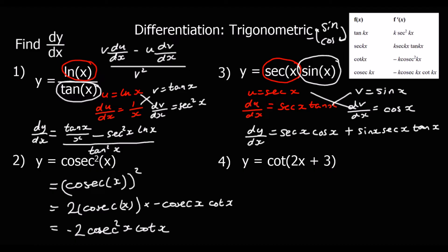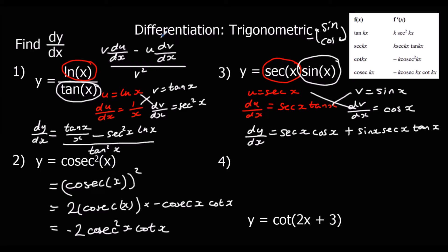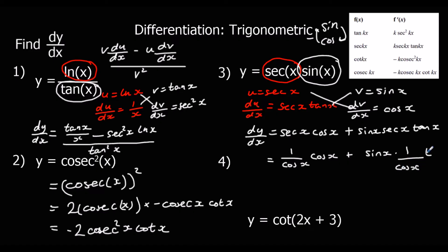Simplifying: sec x cos x — since sec x is 1 over cos x — gives 1 over cos x times cos x, which equals 1. Then sin x times 1 over cos x is sin x over cos x, which is tan x, times another tan x. So the simplified answer is 1 plus tan squared x.